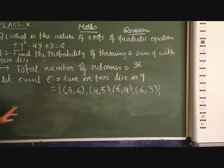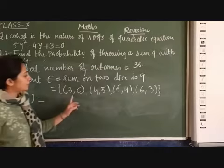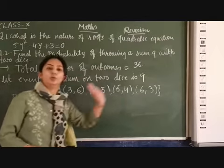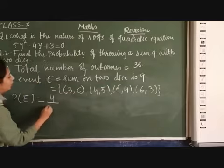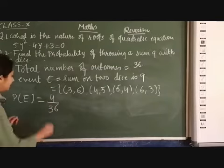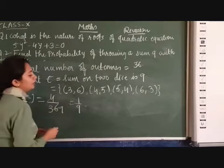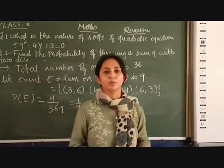So, this way we will find all favorable outcomes. So now, n(E) = how many do we have? 1, 2, 3, and 4. So, P(E) = 4/36 = 1/9. 1/9 is the required probability. Hope it helps you.